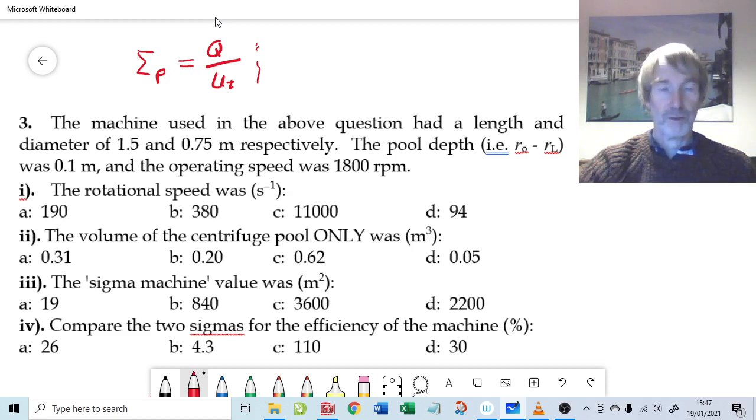If you run the centrifuge, you can actually work out that for a certain rotation speed it gives you this particular result. It's something you can empirically find out from operating the centrifuge. Now we're talking here about the machine itself. I'm not doing the derivation of sigma process and sigma machine; they're in the book. We're just using the equations.